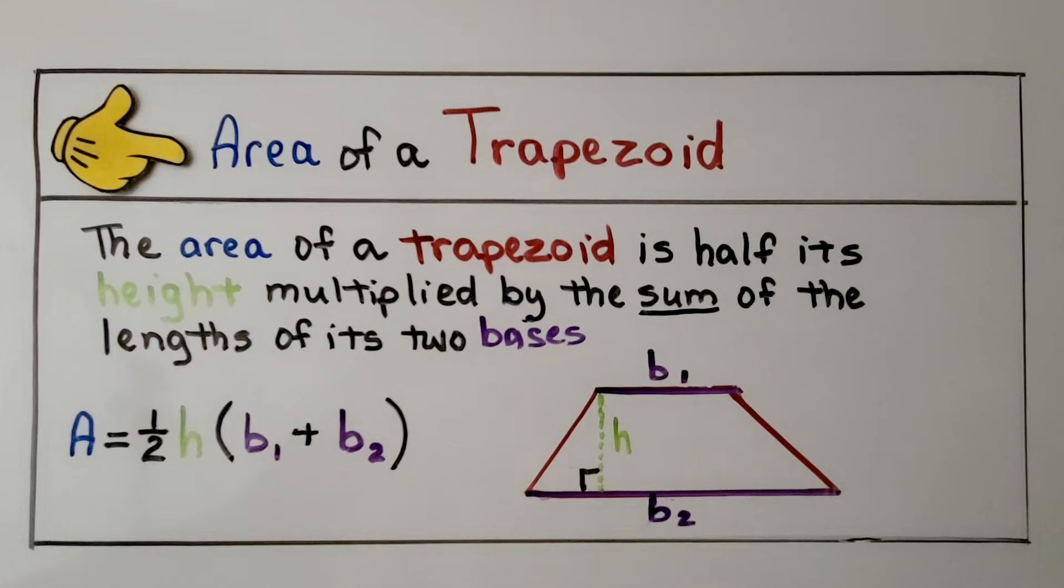So for your notes, this is the area of a trapezoid. The area of a trapezoid is half its height multiplied by the sum of the lengths of its two bases. We have area is equal to half the height multiplied by the sum of the two bases, base 1 and base 2.